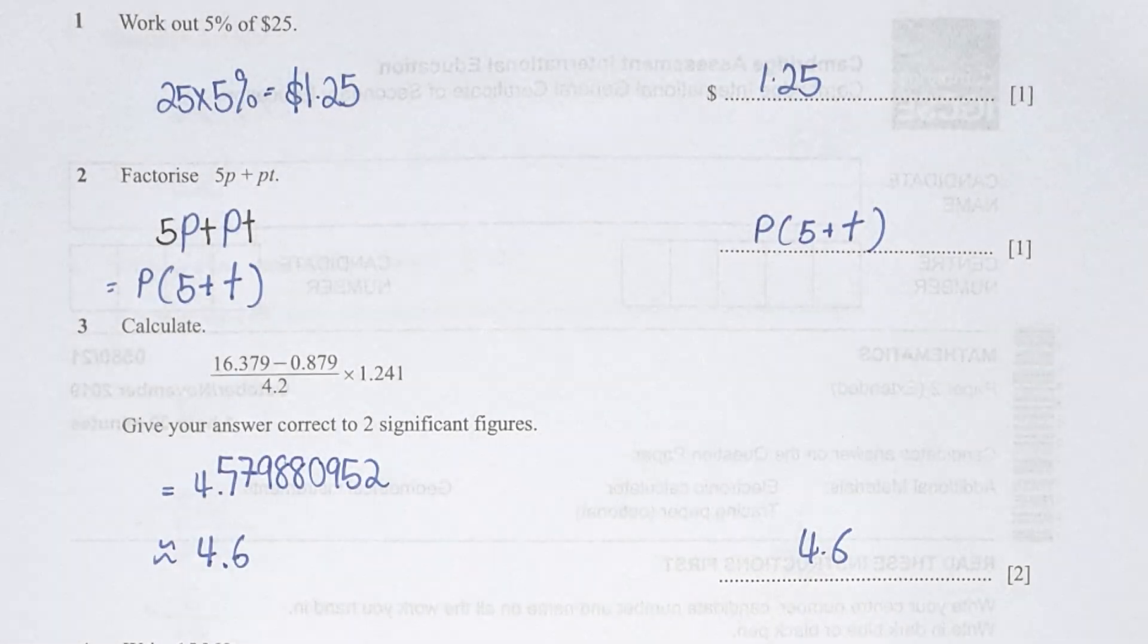For the first question here, it is pretty straightforward. All you need to do is to take 25 multiplied by 5% and you get the result as 1.25.